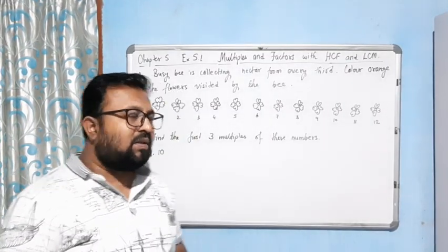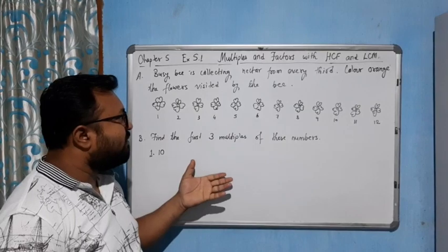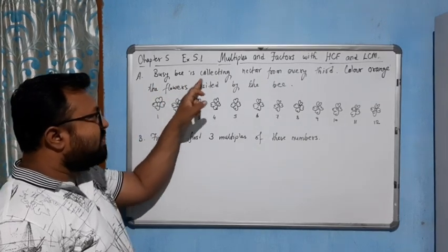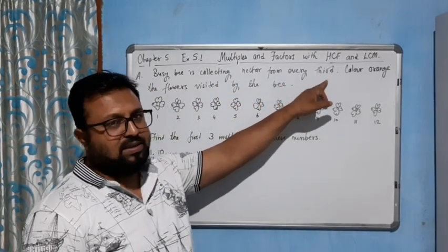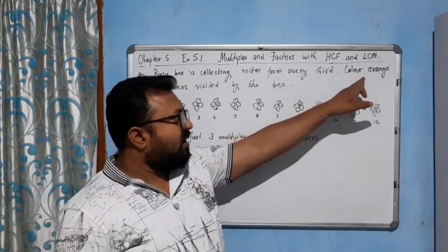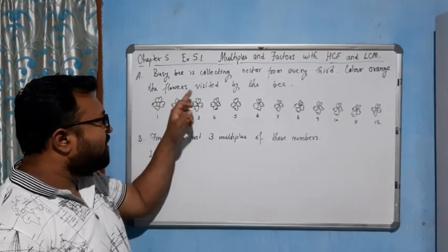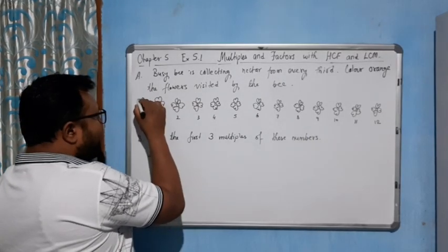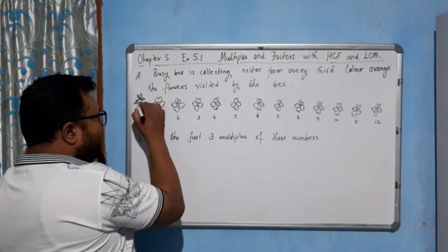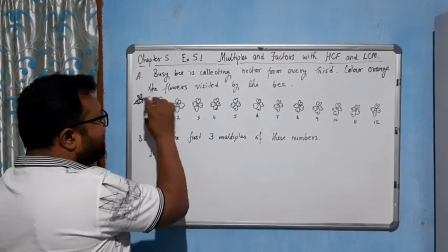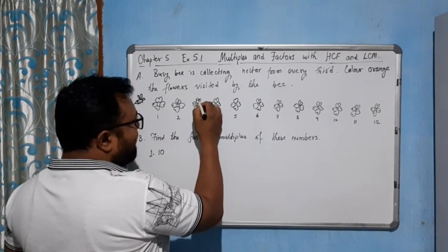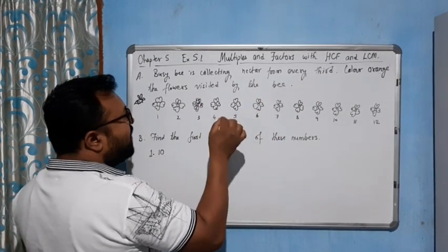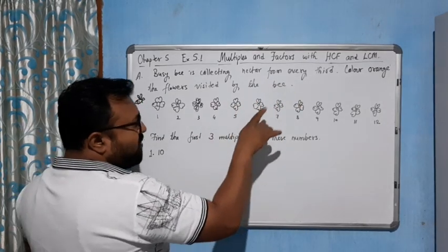Hello students, welcome to the first exercise of this chapter, Exercise 5.1. The first question is that a bee is collecting nectar from every third flower. You have to color orange the flowers visited by the bee. So the bee is visiting every third flower — this one is colored.